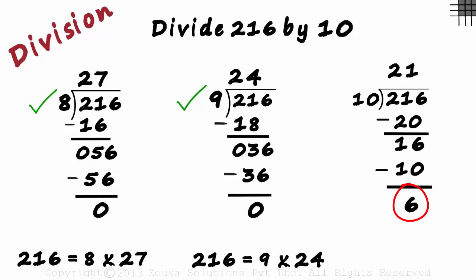As it's not 0, we can say that 10 is not a factor of 216. We can also conclude that 21 is not a factor of 216.